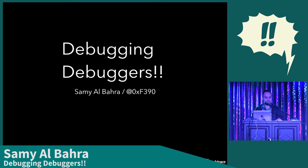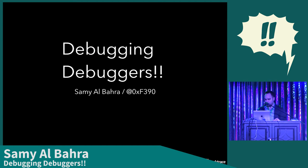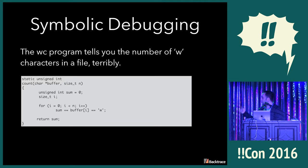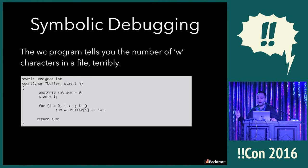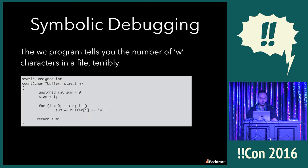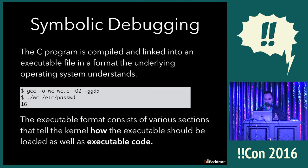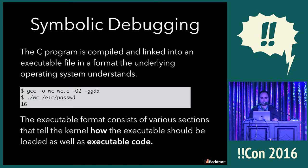A lot of you have potentially used one, whether it's GDB, LDB, Delve if you're working with Go, and they all break in mysterious ways. So we're going to work with an example that reflects typical real-world workloads. We have a program which counts the number of W characters in a file terribly. Central to this program is the function count, which loops through a buffer and increments sum whenever the current character is W. This is C, compiled with GCC, run on /etc/passwd, and it finds 16 characters.